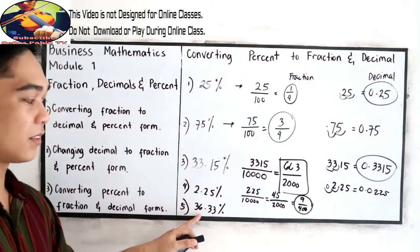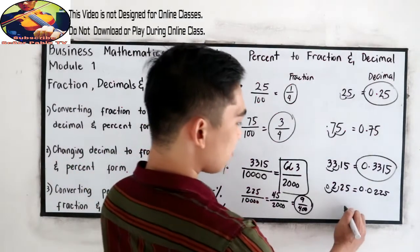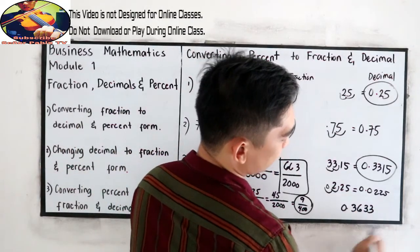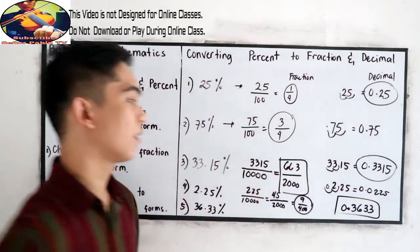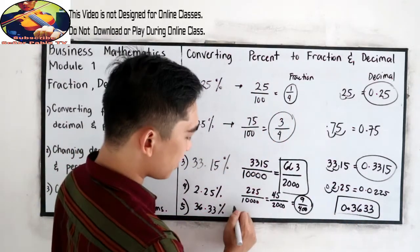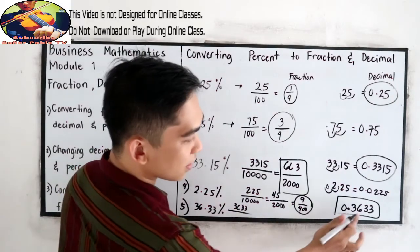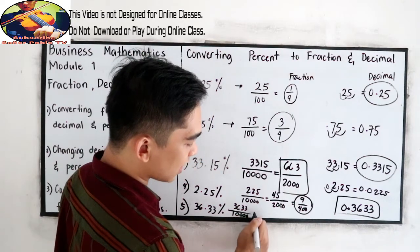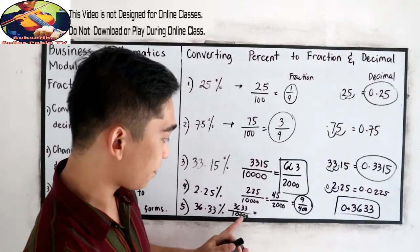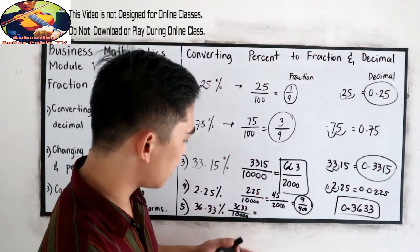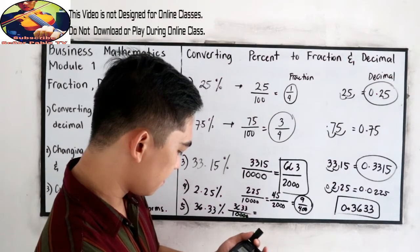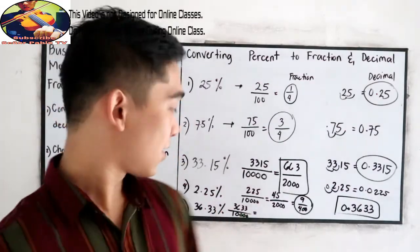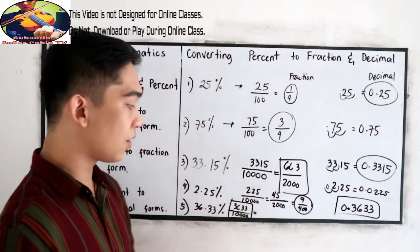Next, number 5: 36.33%. Moving the decimal twice to the left gives us 0.3633. Now writing as a fraction: 3633 over — we have 4 decimal places, so 4 zeros in the denominator — 10,000. Reducing to lowest terms: are they divisible by any number? I think there is none. So the fraction form is 3633 over 10,000.